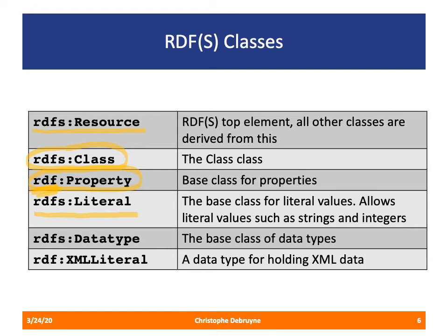RDFS also introduces RDFS datatype, the base class of data types, ranging from xsd:int, xsd:string, to xsd:dateTime, and even data types from other ontologies such as GeoSPARQL's WKT literal. Then there's a special data type, xml:literal from RDF, which is used to hold XML data. We won't be covering that in these lectures.